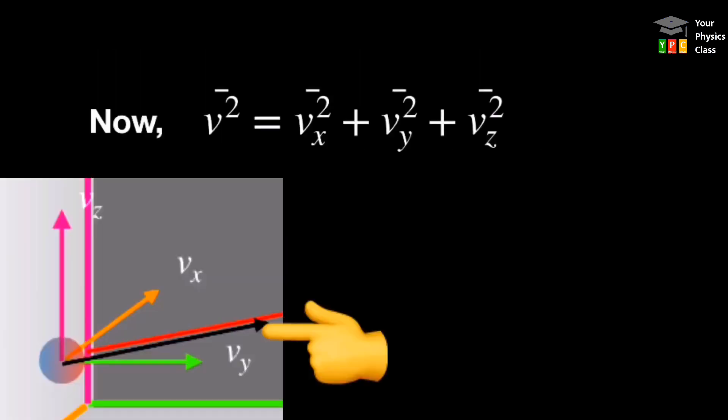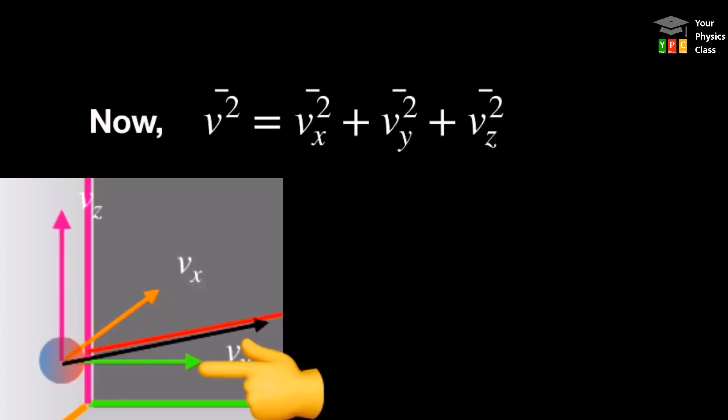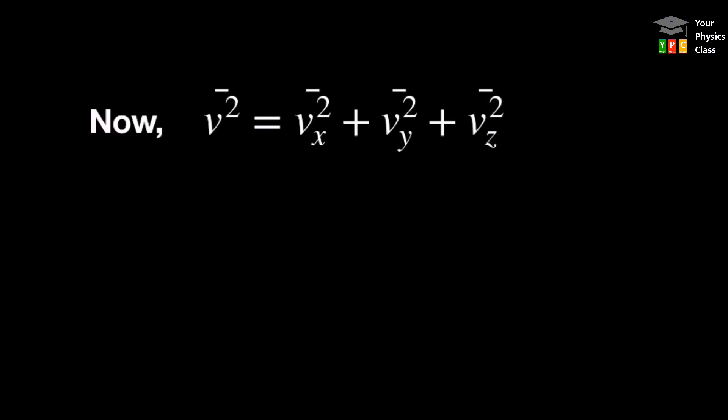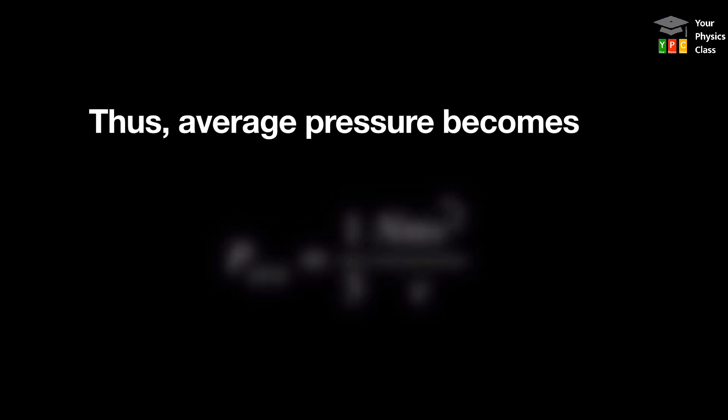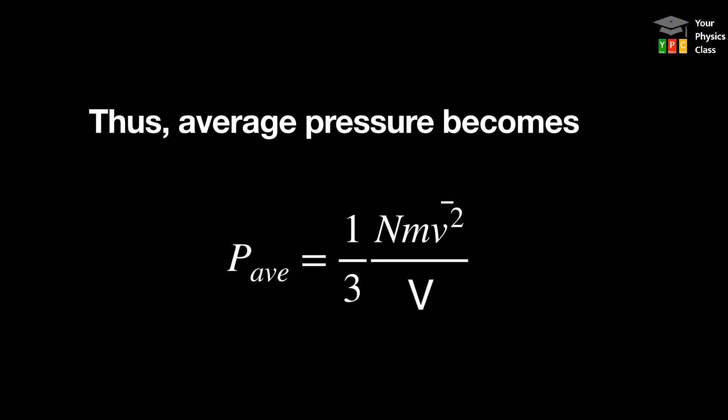We know that V be the velocity of molecule and VX, VY, VZ are its component. So by vector rule ham square of magnitude of average velocity ko aisa likh sakte hai. By symmetry ye sab equal hai to inke value one third of average square velocity ho jayegi. Thus average pressure become one third of n times small m bar V square divided by V.